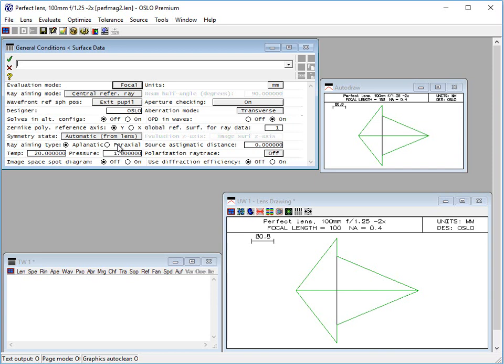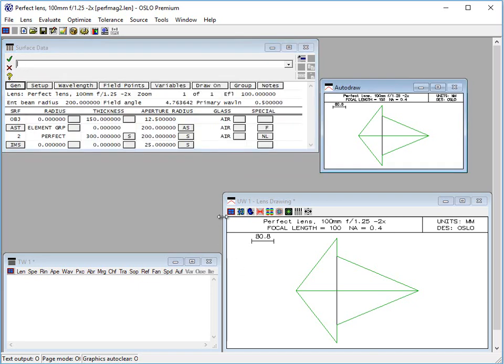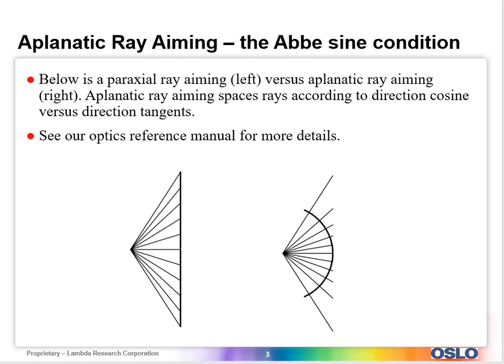Perhaps the only reason you would do that is if you're doing some sort of geometrical optics-oriented calculations for aberration series or something like that. So just keep it on the aplanatic ray aiming mode. That's where it exists in the program, and this discontinuity can be explained with this picture.